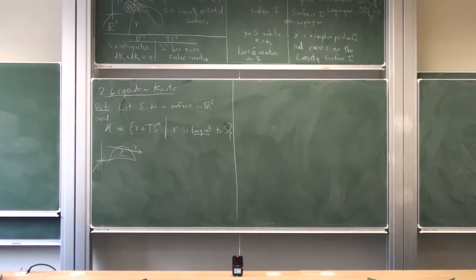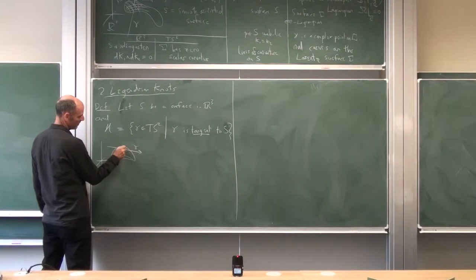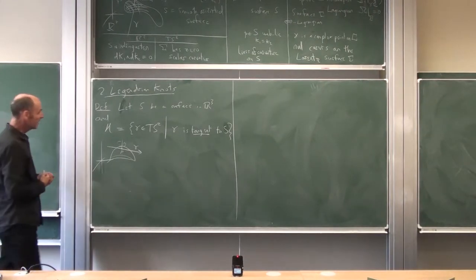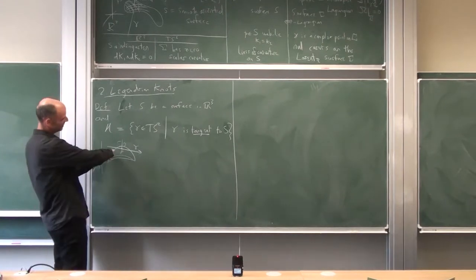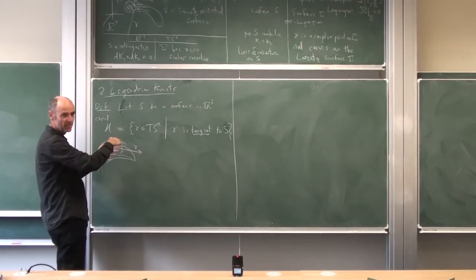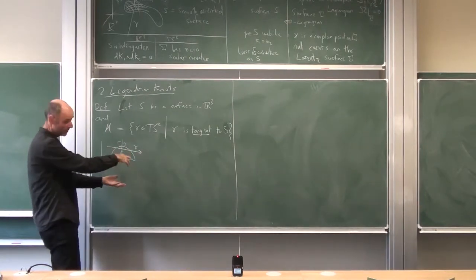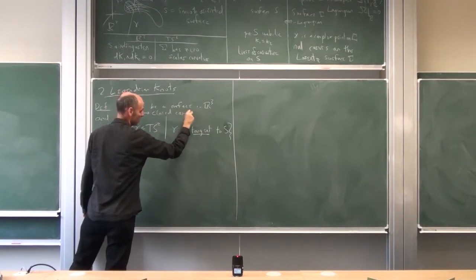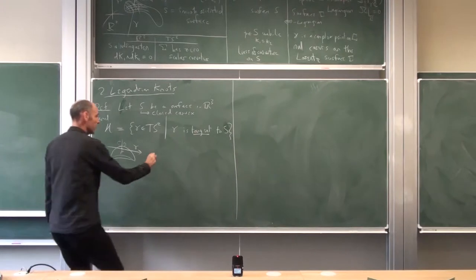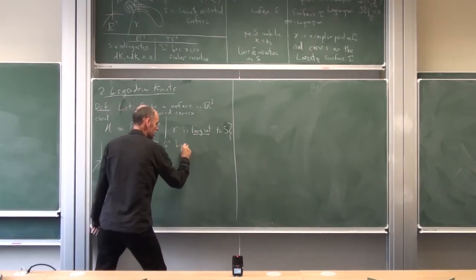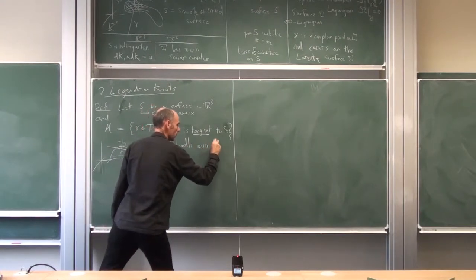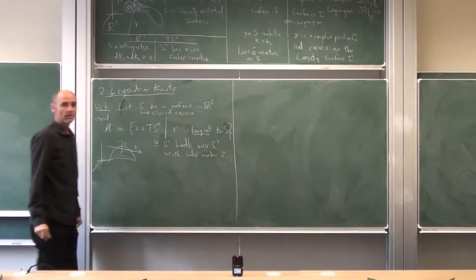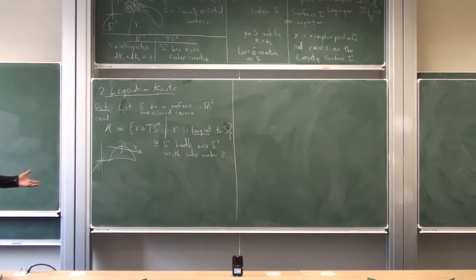Once you have one tangent line at a point, you can rotate it around the normal, so there's a natural S¹ action on this set. After a little thought you can see it's going to be your surface cross S¹. If S is closed and convex, H is going to be equal to an S¹ bundle over S with a certain characteristic class — it's the unit tangent bundle of S².